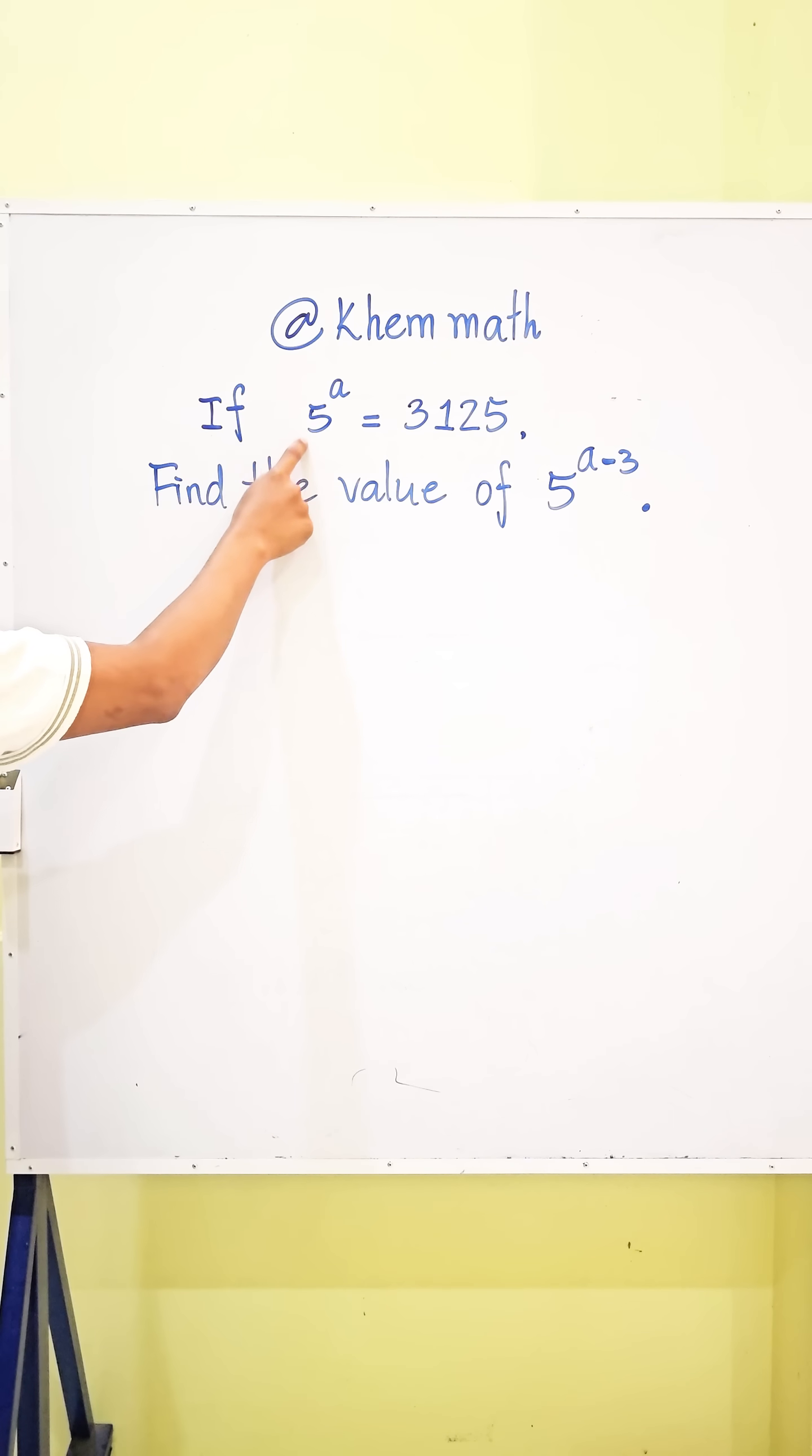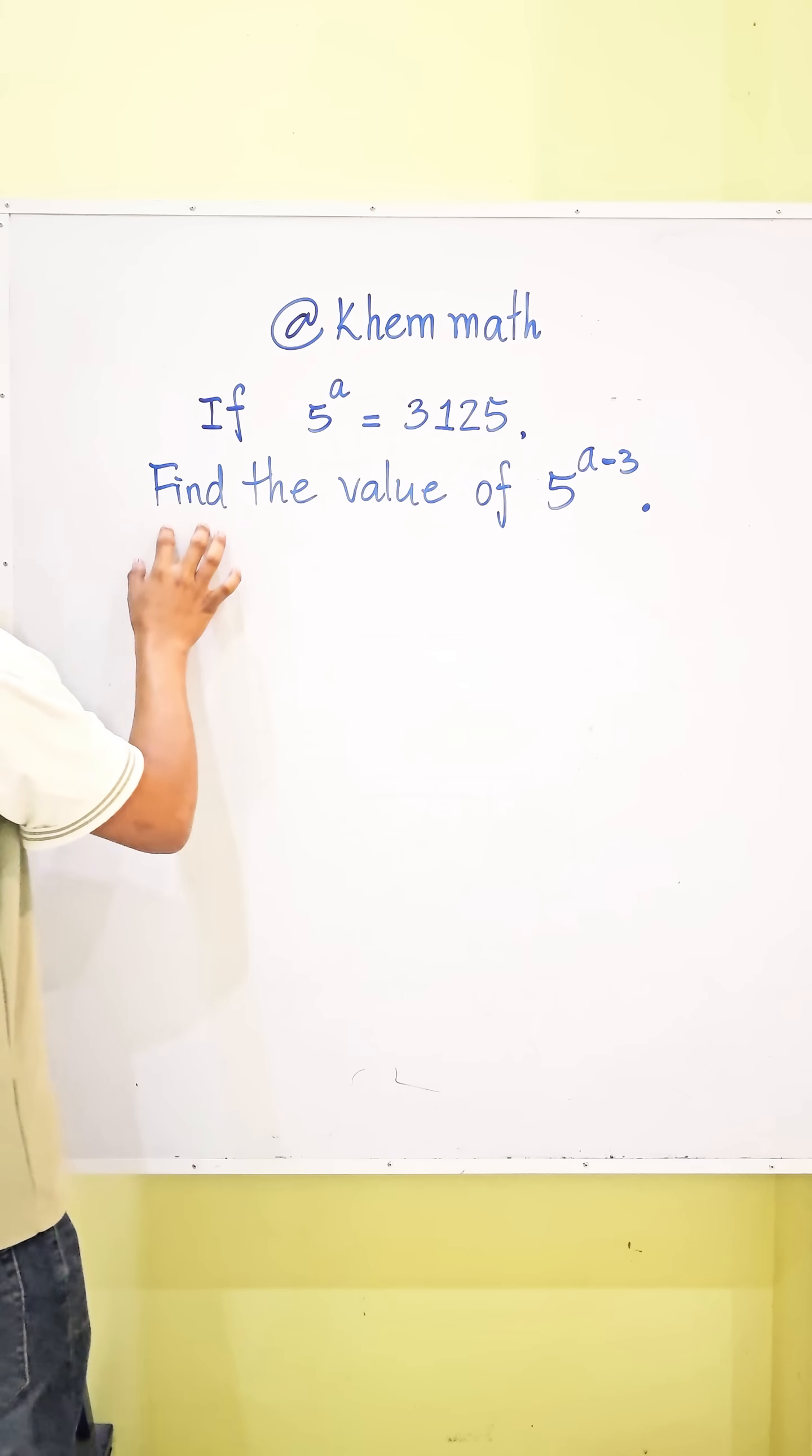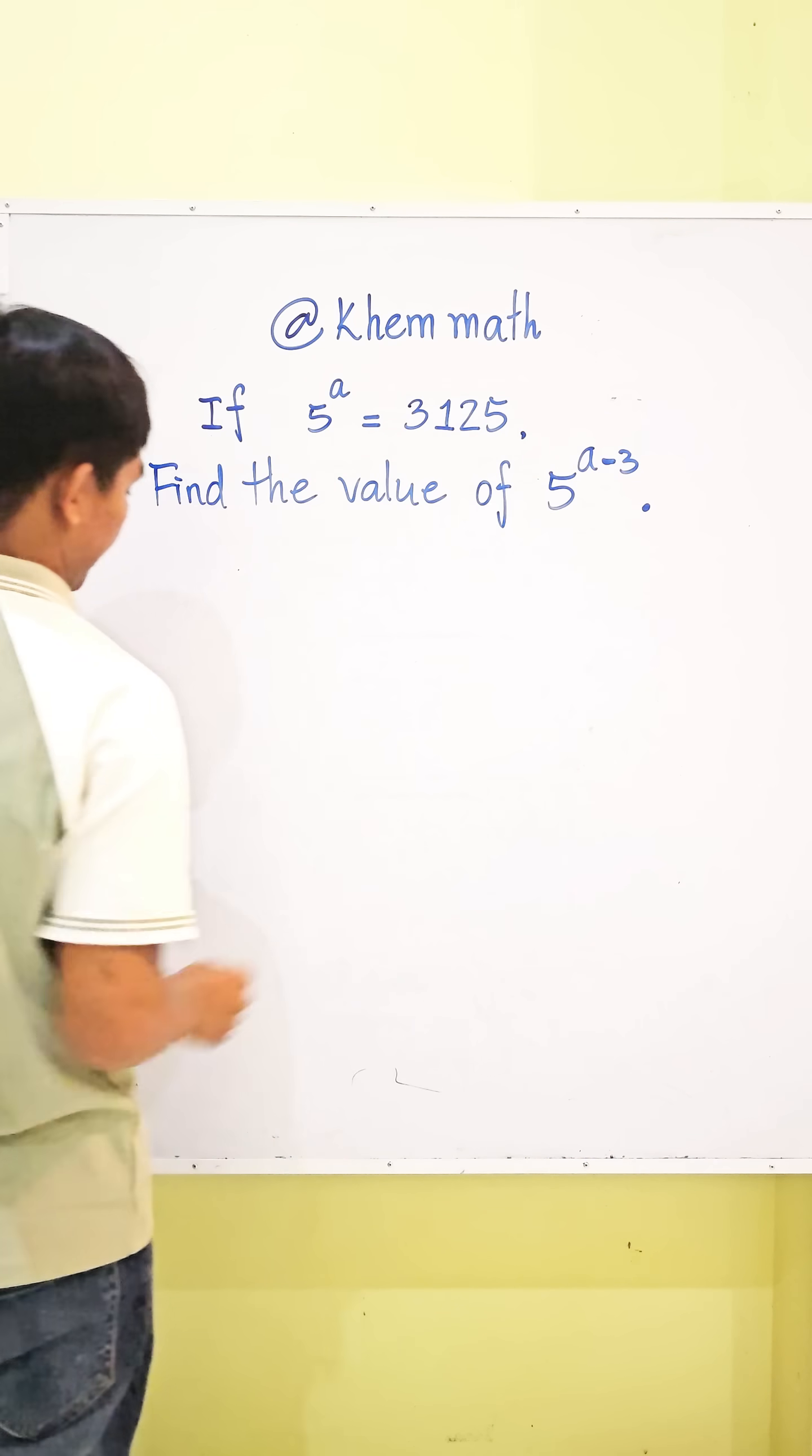If 5 power A equals 3,125, find the value of 5 power A minus 3.